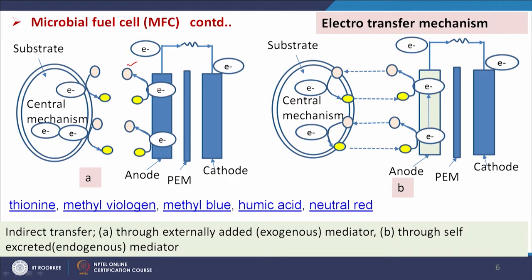Some material added externally increases the electron transfer — that is an external mediator. Indirect transfer through externally added mediator and through self-excreted endogenous mediator is also there. The mediator generated by the cells carries the electron, releases it at the anode, comes back, takes the electron again, and transfers it repeatedly.